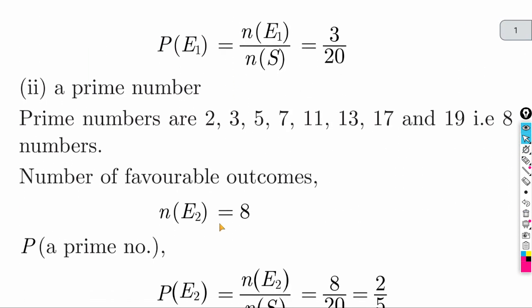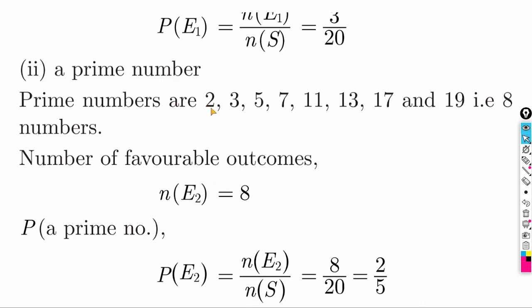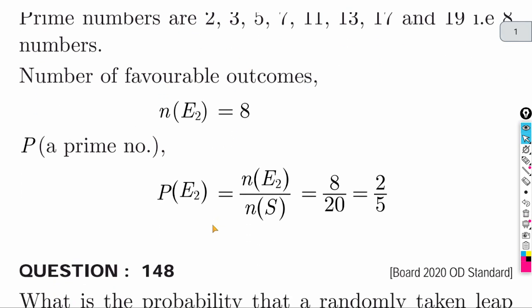Next question is to find the probability of a prime number. From 1 to 20 we have prime numbers — numbers that are divisible only by themselves. 1 is never counted as prime or composite. We count from 2, 3, 5, 7, 11, 13, 17 and 19. That gives us 8 numbers. So the answer is 8 divided by total 20.